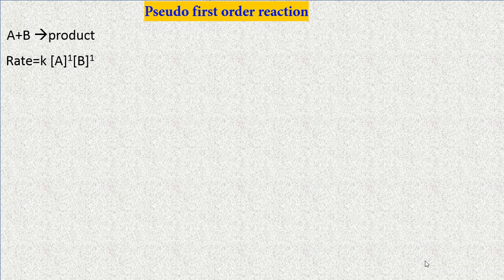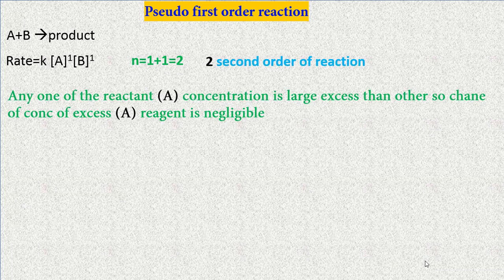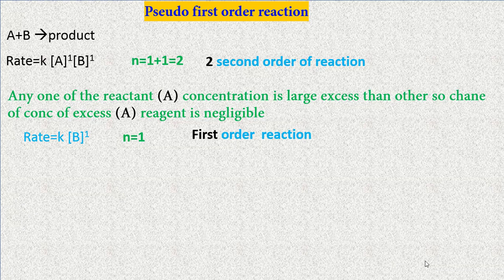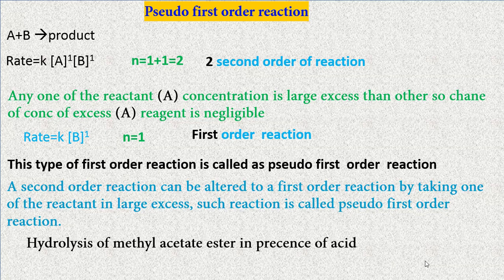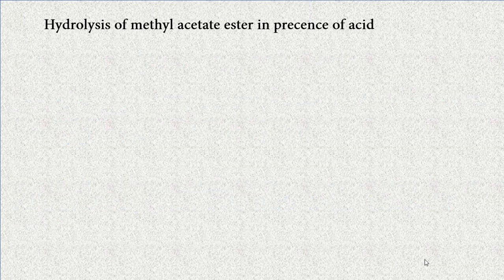Pseudo first order reaction: consider A + B → product, with rate = k[A]^1[B]^1, so n = 2, a second order reaction. If one reactant's concentration is in large excess over the other, the change in its concentration is negligible, so it is removed from the rate law. Then rate = k[B]^1, giving n = 1: a first order reaction. This type of reaction is called a pseudo first order reaction. A second order reaction altered to first order by taking one reactant in large excess is called a pseudo first order reaction.